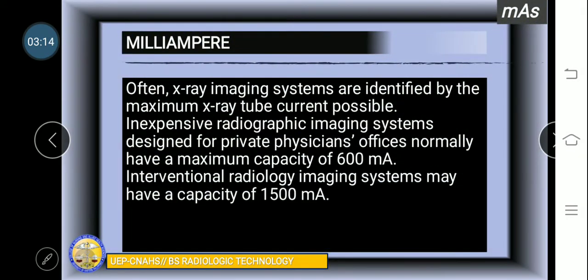Often x-ray imaging systems are identified by maximum x-ray tube current possible. When you apply for a license to operate an x-ray equipment, the DOH checks the capacity of your x-ray machine, the kilovoltage capacity and the MA offered. For example, here in our institution, our MA is set at 200 MA maximum, which means we can perform different procedures ranging from extremities, chest, abdomen, and skull.